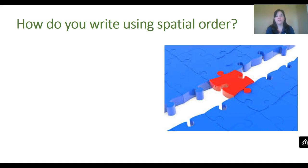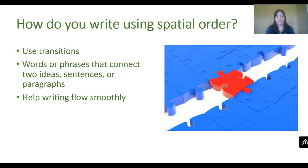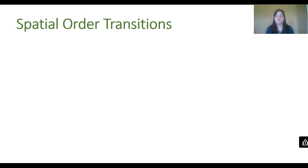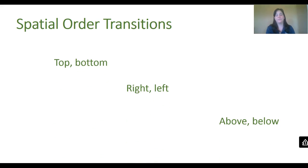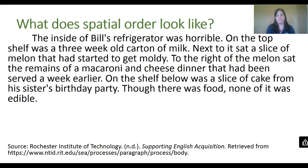When using spatial order, you need to use transitions. As a review, transitions are words or phrases that connect ideas, sentences, or paragraphs, and they help your writing flow smoothly. They help guide the reader from detail to detail and also help keep you as the writer on track. Some examples of transitions used in spatial order include: right and left, top and bottom, above and below, near and far, middle, side, or center, background or foreground, here and there, and across, opposite, and beyond.